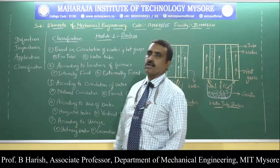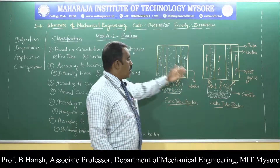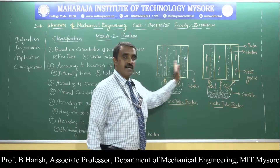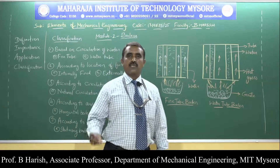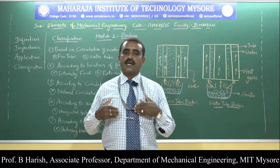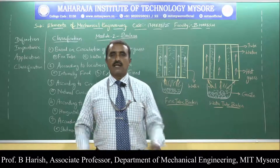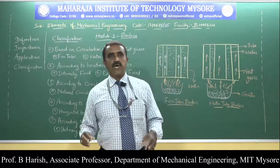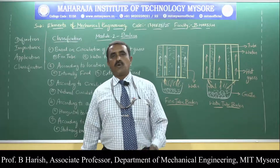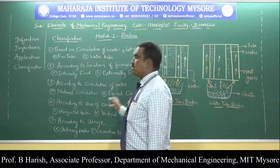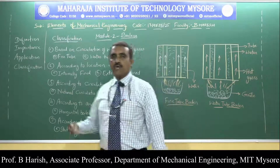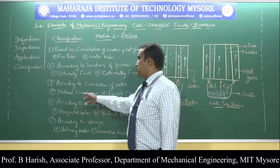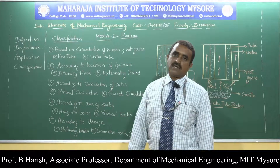The third classification is according to circulation of water. If water is circulated naturally without any external device, it is called natural circulation. If we are using a pump to pump water into the boiler shell, it is called forced circulation. So the types are natural circulation boiler and forced circulation boiler.